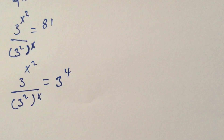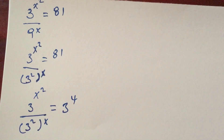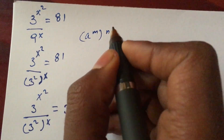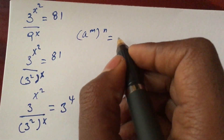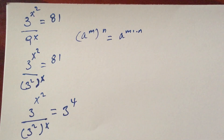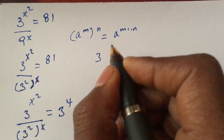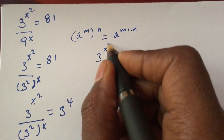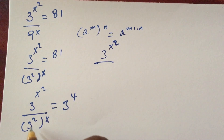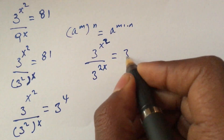Here we apply the exponent formula: A to the power of m times n equals A to the power of m times A to the power of n. So 3 squared to the power of x becomes 3 to the power of 2x, giving us 3 to the power of x squared over 3 to the power of 2x equals 3 to the power of 4.